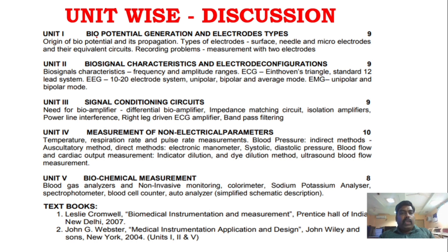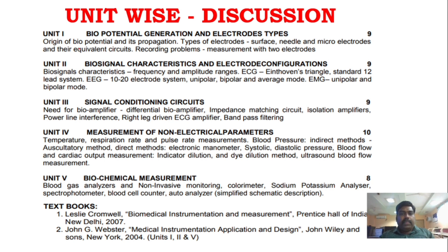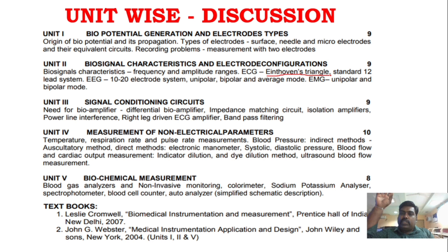Starting the unit-wise discussion: in Unit 1, potential generation and electrodes is a very important question. Types of electrodes and what are micro-electrodes are also very important questions. Moving on, you have to understand ECG measurement, EEG, as well as EMG measurement.